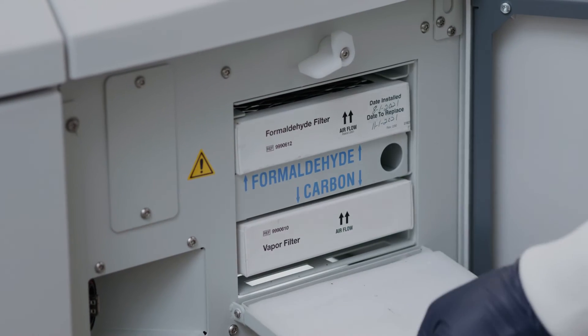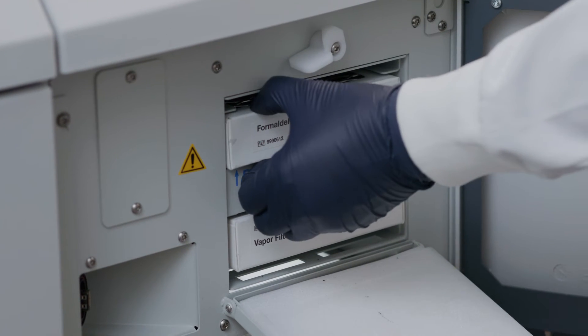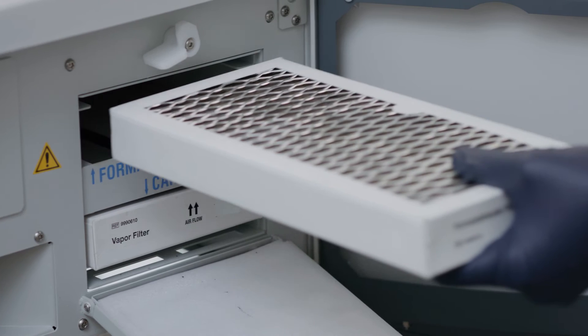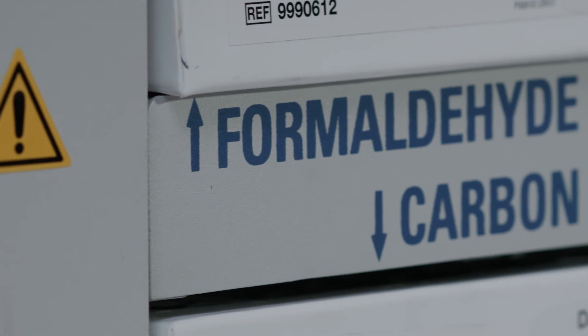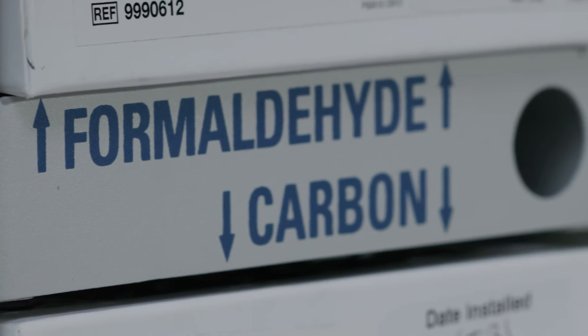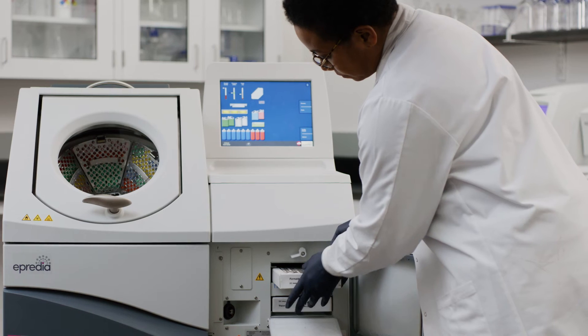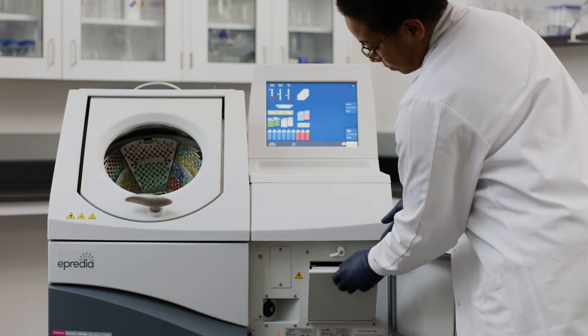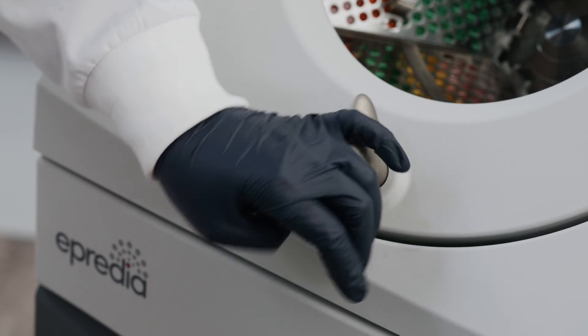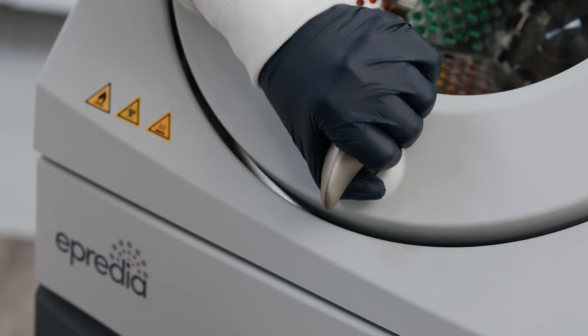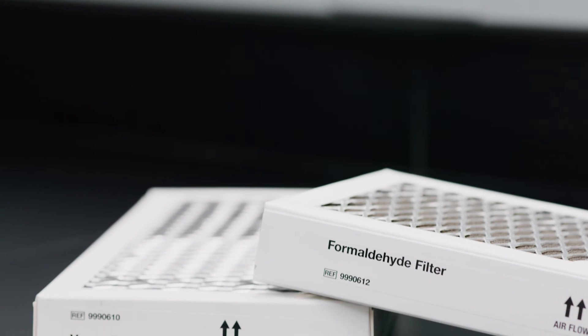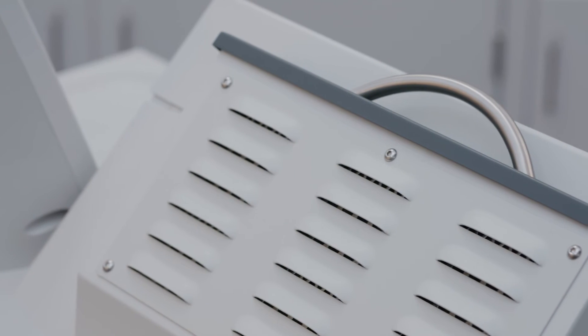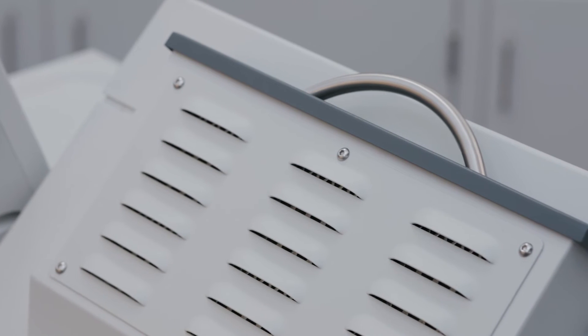As the only tissue processor on the market to offer triple filtration within the chamber and reagent cabinet, the Revos Rotational Tissue Processor's enhanced safety features help protect laboratory staff from harmful fumes. Its downdraft ventilation technology activates automatically within the reaction chamber when the handle is turned, and the potassium permanganate and carbon dual filtration system keeps toxic fixatives and solvent fumes within the reagent storage cabinet. This filtration system navigates harmful chemicals away from your personnel for increased safety.